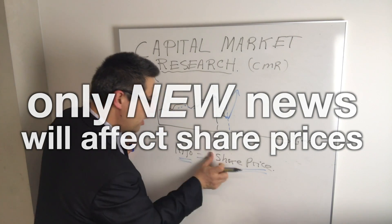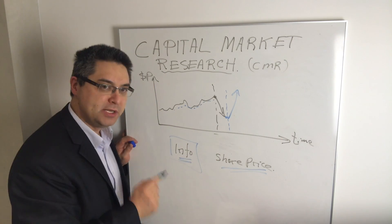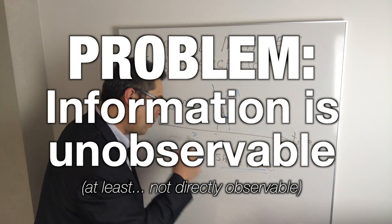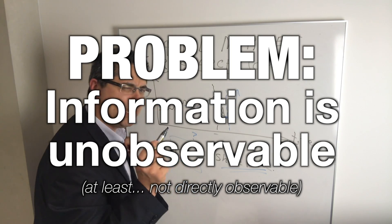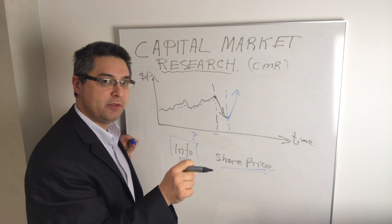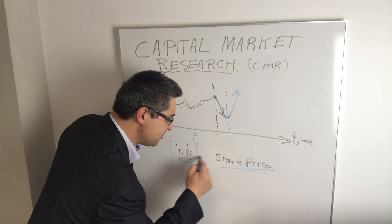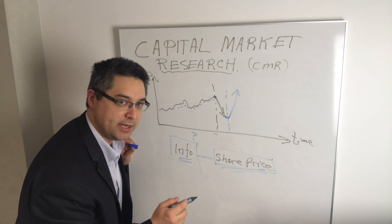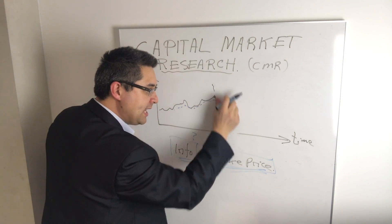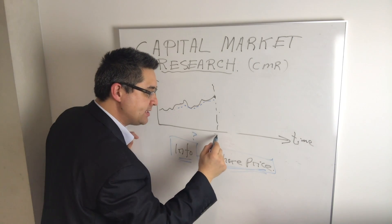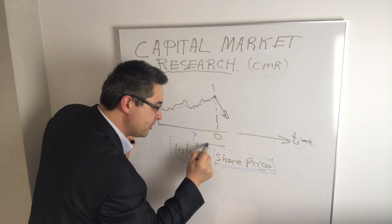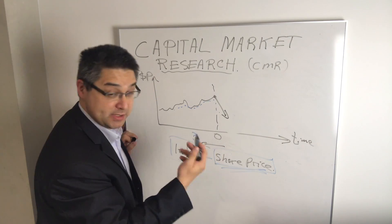We have a problem because information is what we want to know about, but we don't know which information is actually useful. However, while we can't observe information, we can observe the share price — we can measure it accurately to the second and track it over a couple of days. So what capital markets research tries to do is take this relationship between information and share price and turn it on its head: if some piece of information was released at time zero and the share price went down, we infer backwards that the information existed and that it was bad.